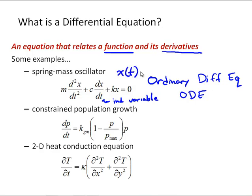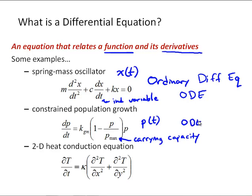This next equation describes a model for constrained population growth. Here we would have some carrying capacity of the population, say due to a limited food supply. The solution to this would also be a function, some p of t, where p is the total population. And this is again another ordinary differential equation because it only deals with derivatives with respect to time.